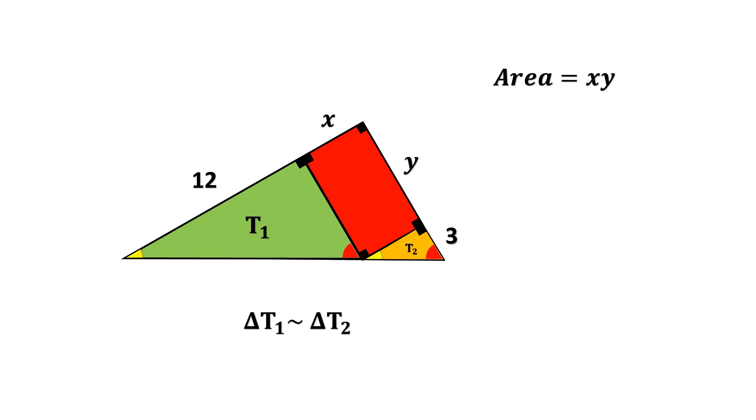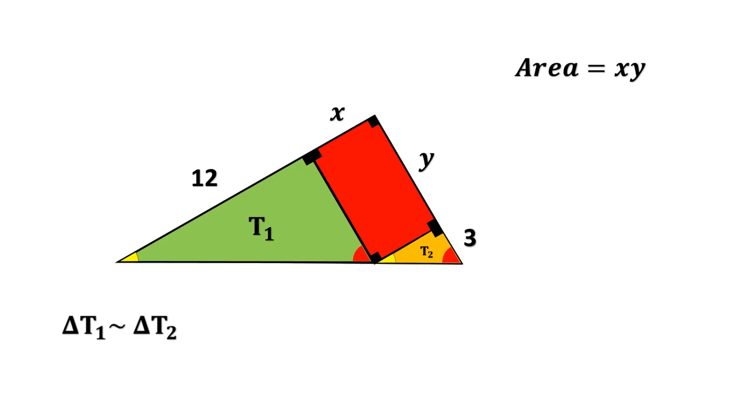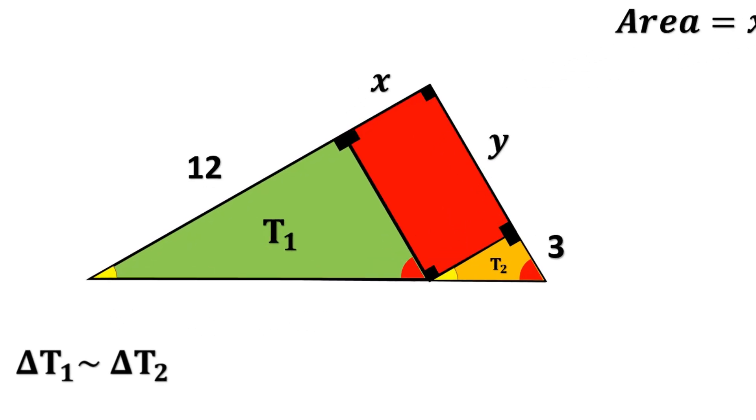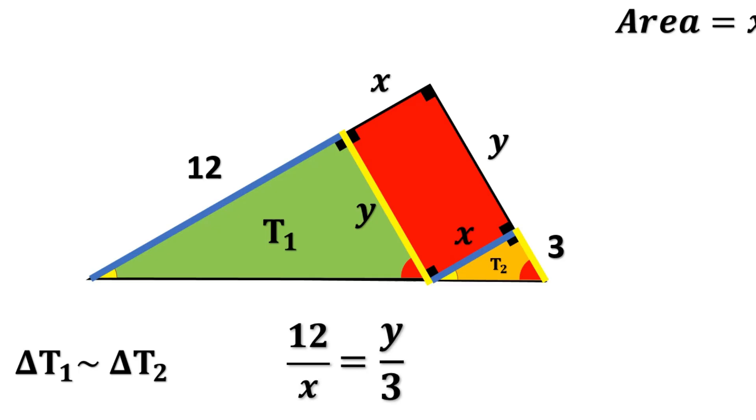And now that we know they're similar, we can write the ratio of their corresponding sides. The side opposite the red angle in T1 or length 12 divided by the side opposite the red angle in T2 or length X equals the side opposite the yellow angle in T1 or length Y divided by the side opposite the yellow angle in T2 or length 3. So the ratio becomes 12 over X equals Y over 3.